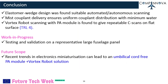Conclusions: the elastomer wedge design was found suitable for automated and autonomous scanning. Mist couplant delivery ensures uniform couplant distribution with minimum water. Vortex robot scanning with the PA module is found to give repeatable C-scans on flat surfaces, which can lead to a TRL4 solution. Current work in progress — testing and validation on a representative large fuselage panel is ongoing. Future scope: recent trends in electronic miniaturization can lead to an umbilical cord-free PA module Vortex robot solution.